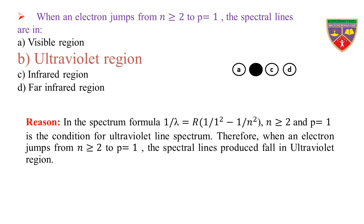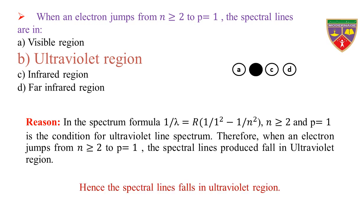Reason: In the spectrum formula 1/λ = R(1/1² − 1/n²), where n ≥ 2 and p = 1 is the condition for the ultraviolet line spectrum. Therefore, when an electron jumps from n ≥ 2 to p = 1, the spectral lines produced fall in the ultraviolet region. Hence, the spectrum lines fall in the ultraviolet region.